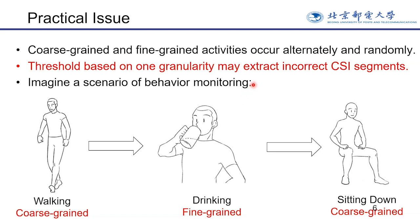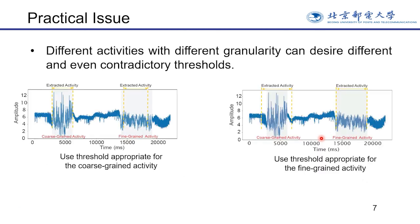In practice, coarse-grained and fine-grained activities usually occur alternatively and randomly. If the threshold is decided based on one granularity, it will extract incorrect CSI segments. Take the application of elderly monitoring as an example: a target may walk to the living room, take a drink, and then sit down on a chair. The activity recognition system needs to continuously segment both coarse-grained and fine-grained activities. For coarse-grained activity, the CSI changes are distinguishable from background CSI noise, so a large threshold is appropriate, which can avoid extracted activity containing unnecessary noise.